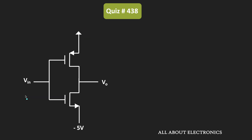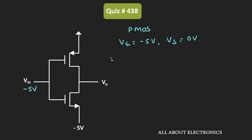Similarly, let's see what happens when the input voltage is equal to minus 5V. For the PMOS transistor, the gate voltage will be equal to minus 5V. The source voltage VS is connected to the ground terminal, so VS is equal to 0V. For this PMOS transistor, the source-to-gate voltage VSG equals 0 minus (minus 5V), that is equal to 5V. Since this voltage is more than the threshold voltage, this PMOS transistor will remain in the ON condition.